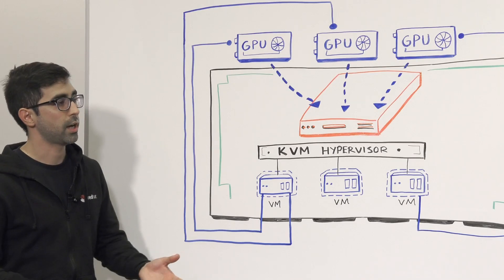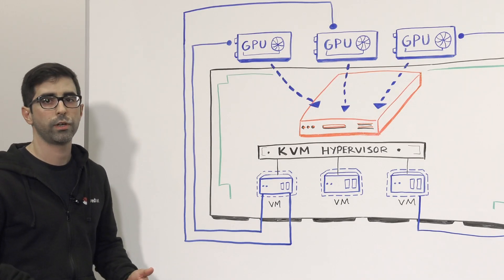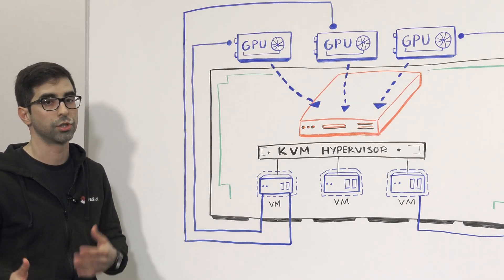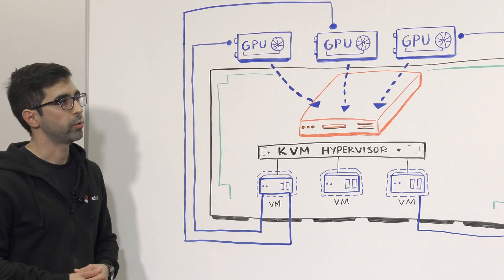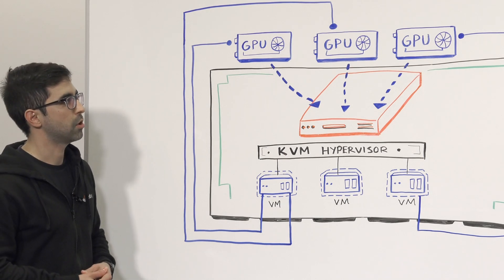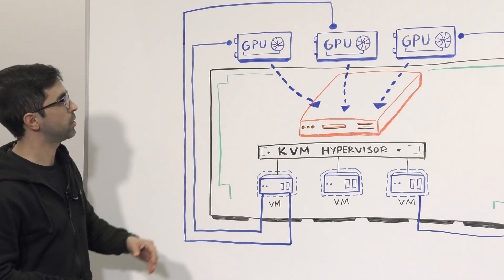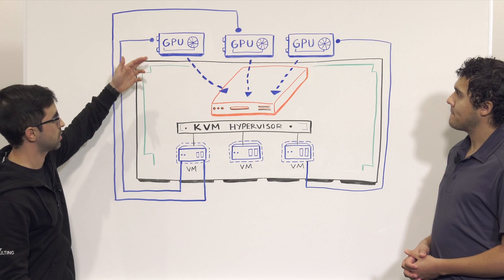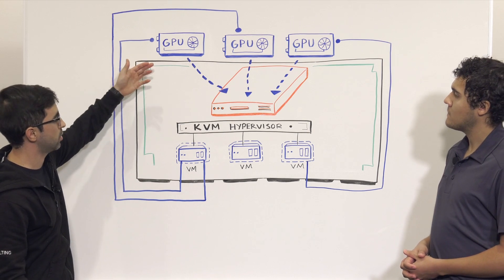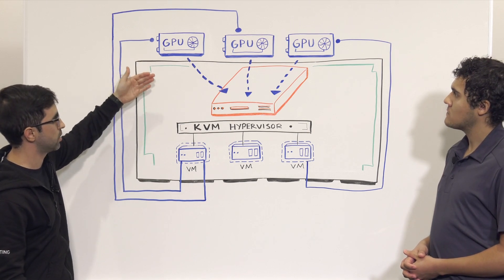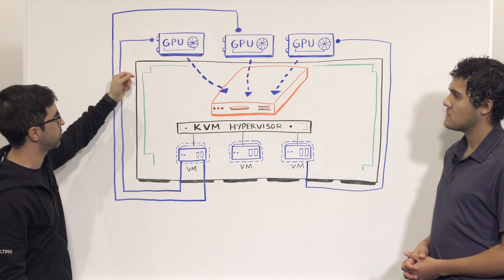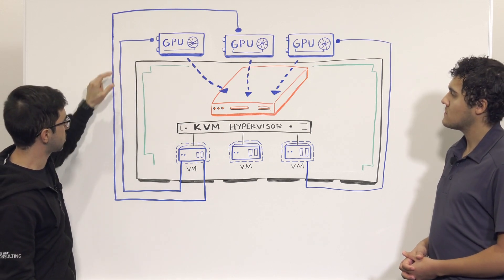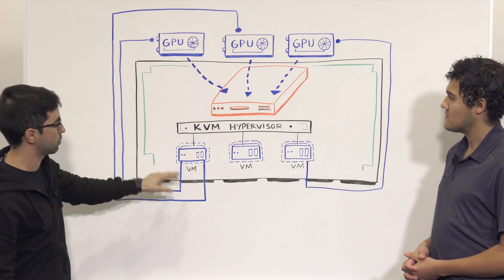Yeah, that's actually funny you should ask. I just came off a client engagement recently where they wanted to do just that. We implemented a feature called PCI pass-through, and that's basically where you can take these physical PCI devices — like, say, a graphics card, or it could even be a network interface card, or some other device — and attach it straight to the virtual machine.